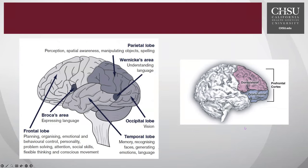I want us to focus on the anterior part of the brain — the frontal lobe, involved with planning, organizing, emotional behavioral control, problem solving, attention, social skills, conscious movement, and flexible thinking. Shown here are the dorsolateral and orbitofrontal cortices that together compose the prefrontal cortex. Those areas are impaired in patients who have difficulties with impulsivity, either as a result of some type of developmental concern, or even acquired through injuries to these areas, which can also be associated with more deficits in impulsivity.